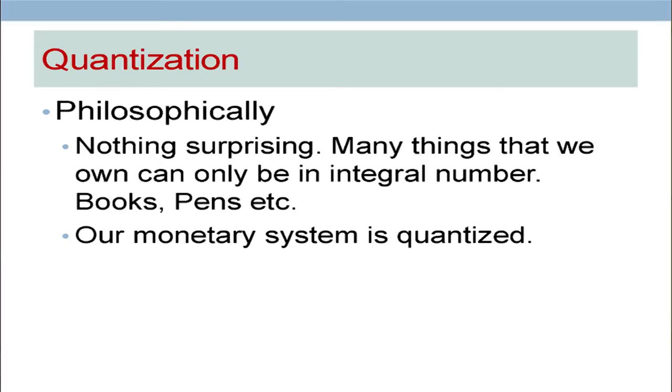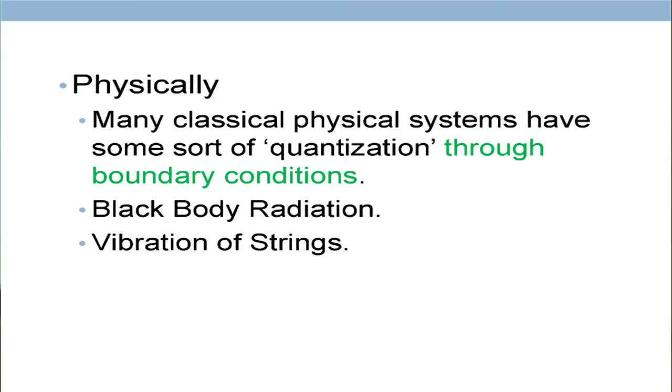Now, let us just try to talk about quantization per se. If you go philosophically, there is nothing very surprising about quantization — there are many things which are quantized in the world. For example, the monetary system is quantized: we can never make a transaction smaller than a paisa, it has to be a multiple of a paisa. Physically, also, there are many other quantized systems. When we dealt with the black body radiation curve, we said only certain frequencies which form a standing wave can propagate inside the cavity — in a way, that was also quantization, because you are allowing only certain frequencies to travel inside the system.